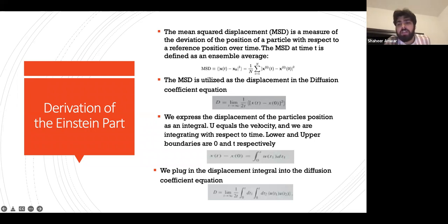We express the displacement of the particle's position as an integral: u equals the velocity, and we are integrating with respect to time with boundaries 0 and t. We then plug the displacement integral into the diffusion equation, and this is what we get.